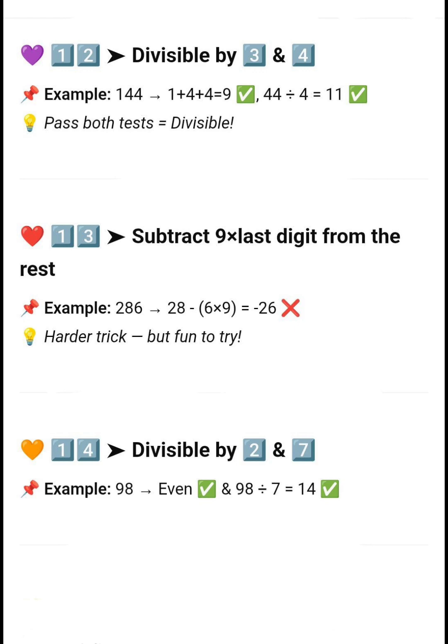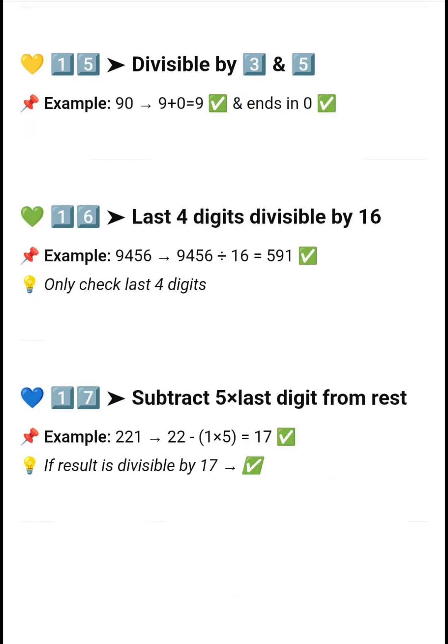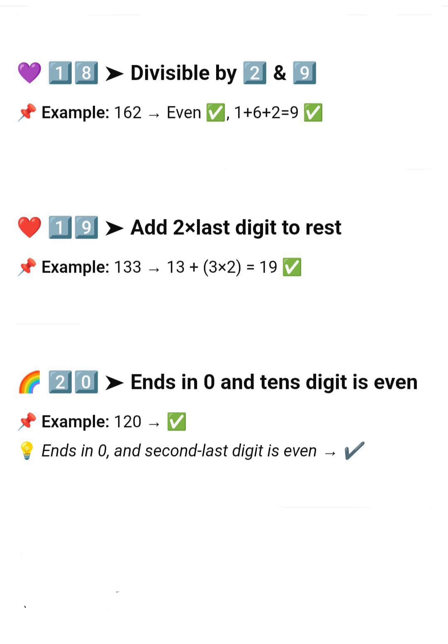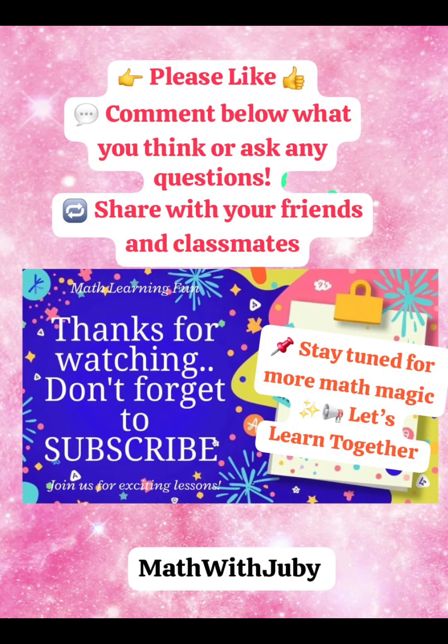Next, divisible by 15 — if a number is divisible by both 3 and 5. Next, divisible by 18 — if a number is divisible by both 2 and 9. Last case, divisible by 20 — if a number ends in 0 and the tens digit is even. I hope this explanation made it clear for you.